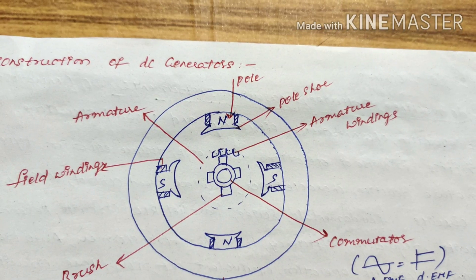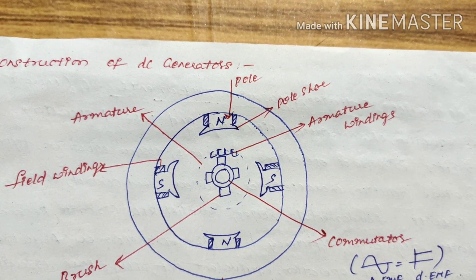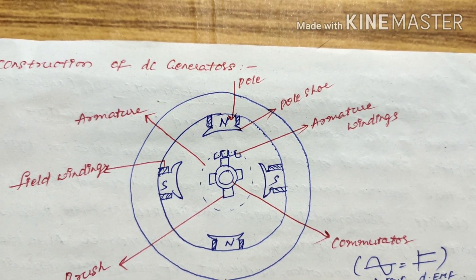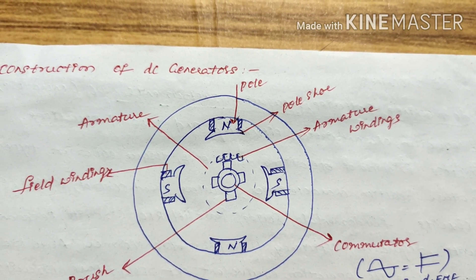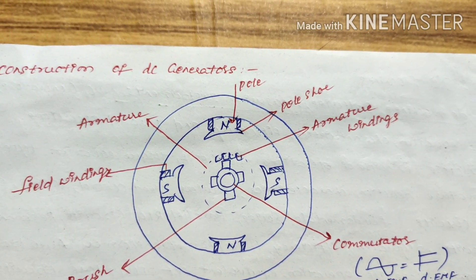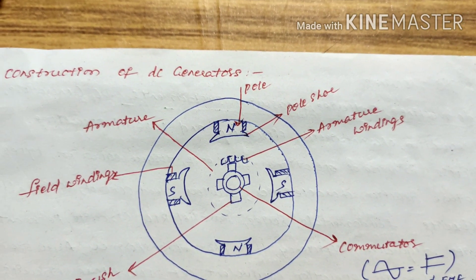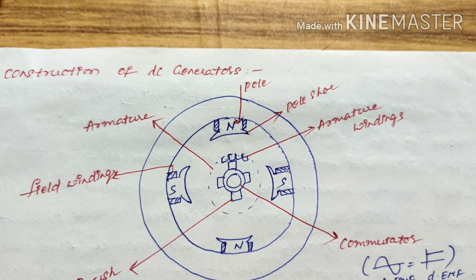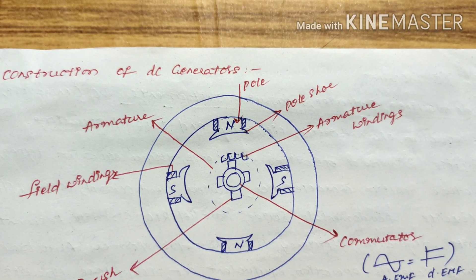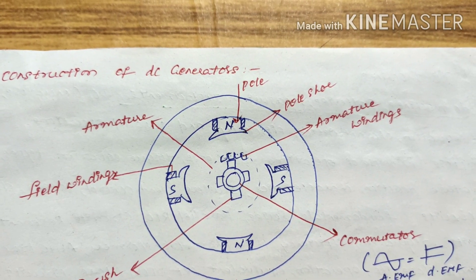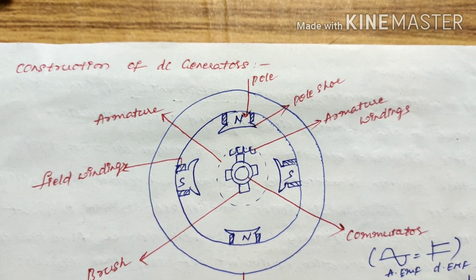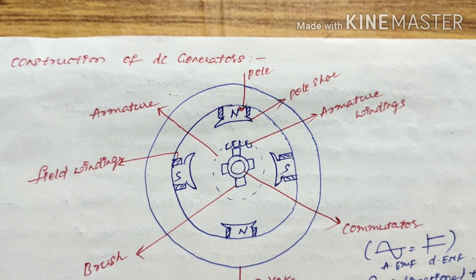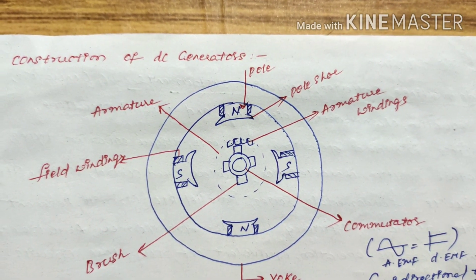Field windings are used to produce a uniform magnetic field within the armature. They are arranged so that no two adjacent poles have the same polarity — opposite poles have the same polarity. The supply given to the entire DC generator passes through the field windings, which excite the entire machine.